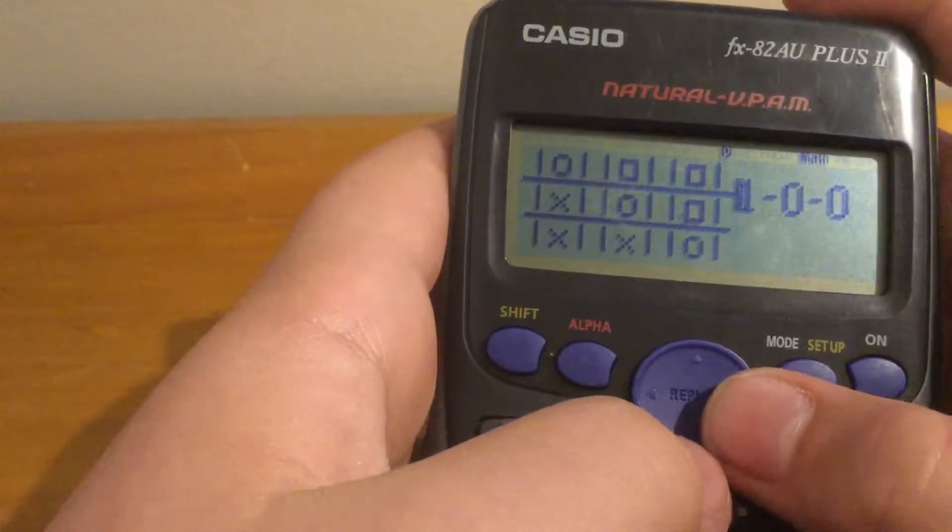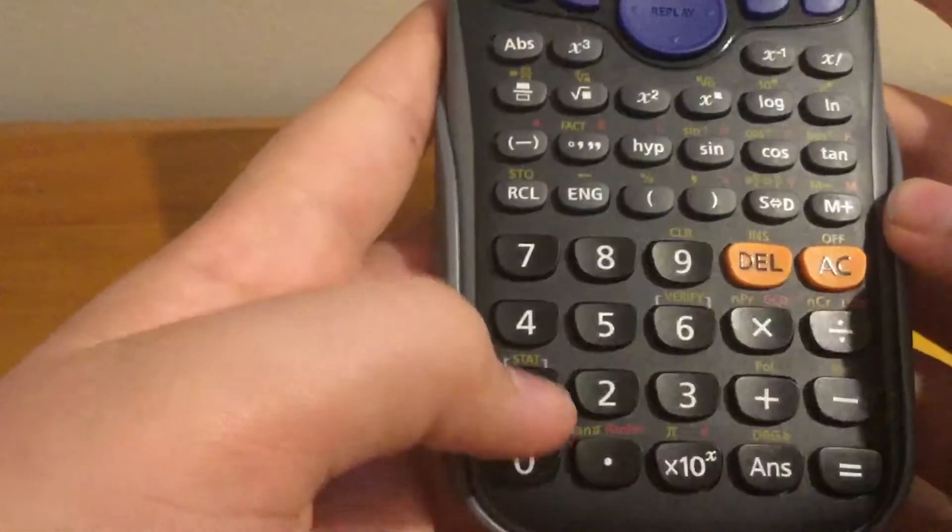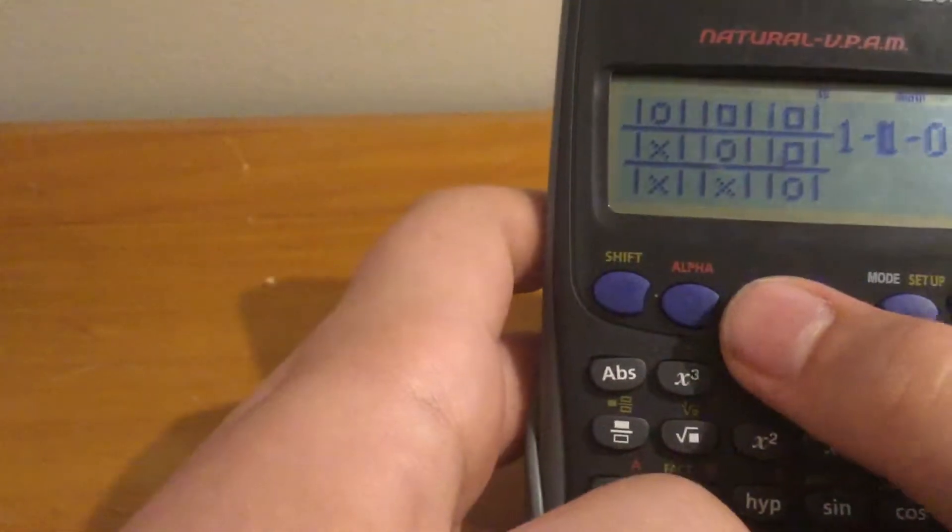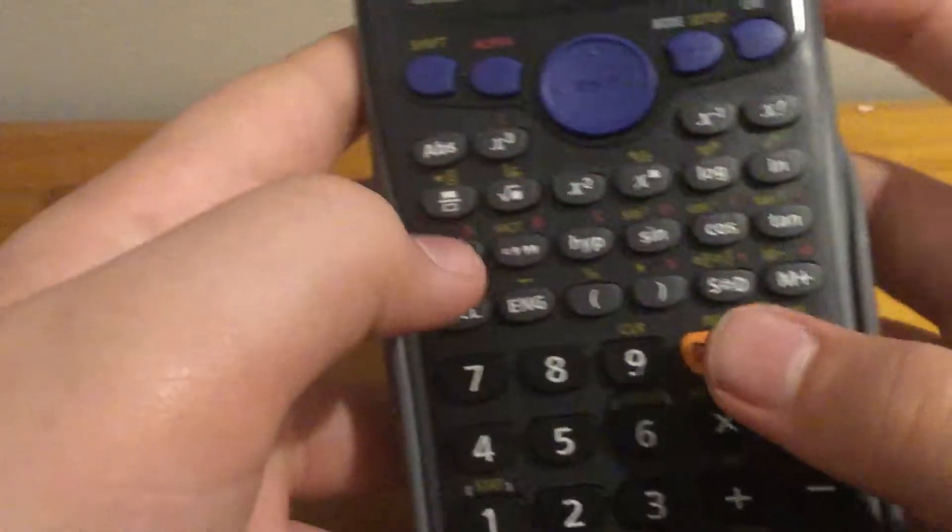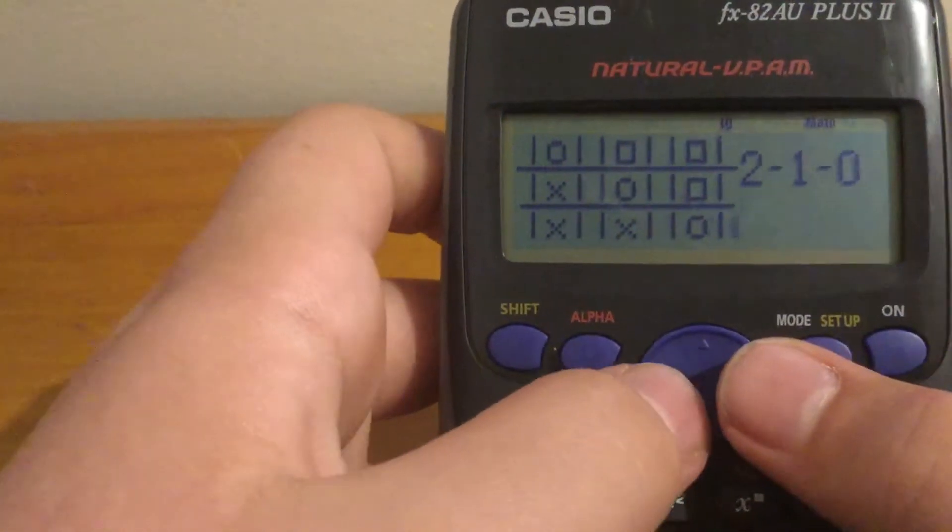Then basically what you do is decide what game you're going to play. So that's a 1, and then you put round 2.